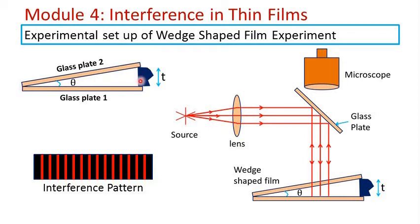If we fill this gap by air, then the refractive index of the film will be equal to 1. When this kind of wedge shaped film is used in the experimental setup and when we make parallel rays of light incident normally on this wedge shaped film, an interference pattern can be obtained which can be seen through a microscope.